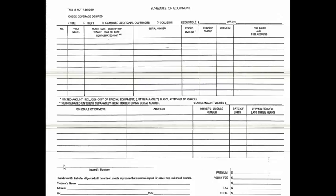You can make the insurance signature. It states: 'I hereby certify that diligent effort having been made, unable to procure the insurance applied for above from an authorized insurer.' Producer's name goes over here. Address. And the premium amount, tax, and total — whatever it is — you have to put that down as well.